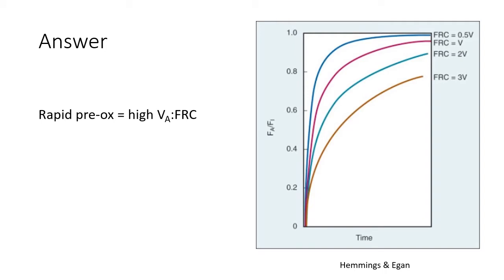In this example, a low FRC would explain both the rapid pre-oxygenation and the rapid desaturation.